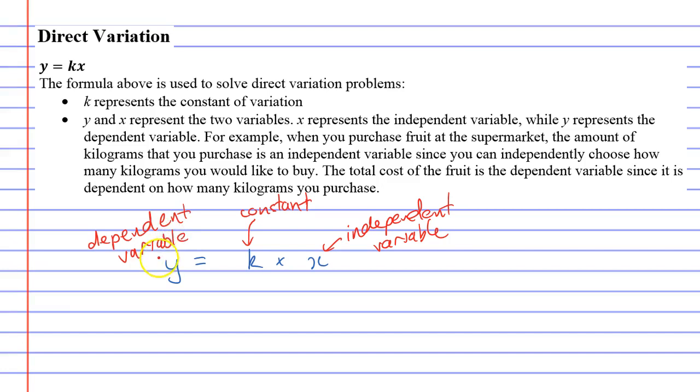To illustrate this, we're going to go back to our example where we had the fruit. The constant was $2 per kilo, the cost per kilogram of the fruit.